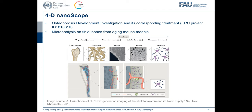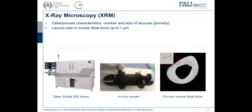In our work, we choose tibial bones from aging mouse models. For osteoporosis development, the number and the size of lacunae are very important characteristics. We know that the lacuna size in most tibial bones can be up to one micrometre, which is very high resolution. With modern X-ray microscopy, it can achieve such high resolution.